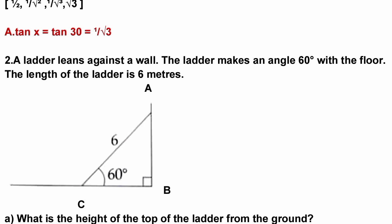Second question: A ladder leans against a wall. The ladder makes an angle of 60 degrees with the floor. The length of the ladder is 6 meters.